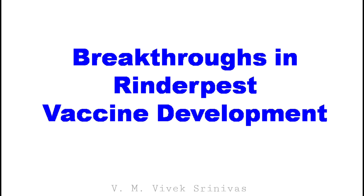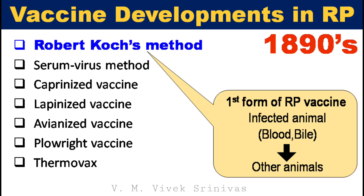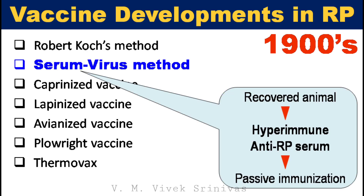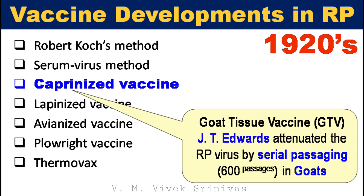Breakthroughs in Rinderpest vaccine development. The first was Robert Koch's method in the 1890s, where blood and bile from infected animals were used to protect other animals. Next, the serum-virus method used hyperimmune antiserum from Rinderpest-recovered animals to immunize others. Later, the Capronized vaccine — the first breakthrough in vaccine development history — was a goat tissue vaccine developed by Edward at IVRI by attenuating the Rinderpest virus in goats through 600 serial passages.